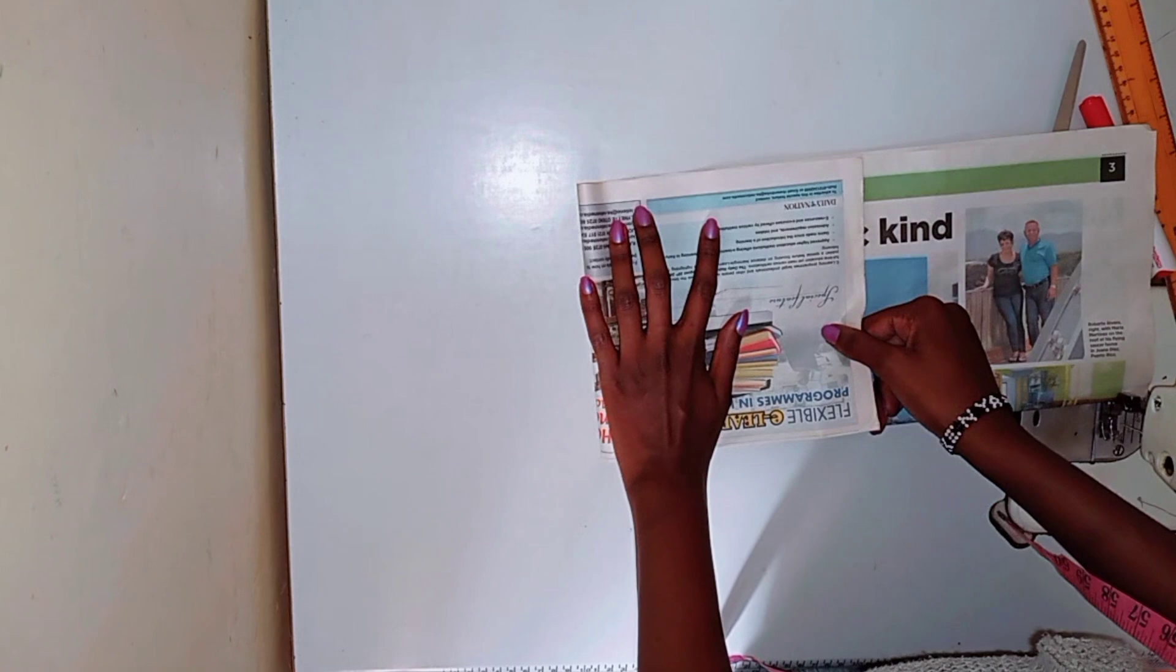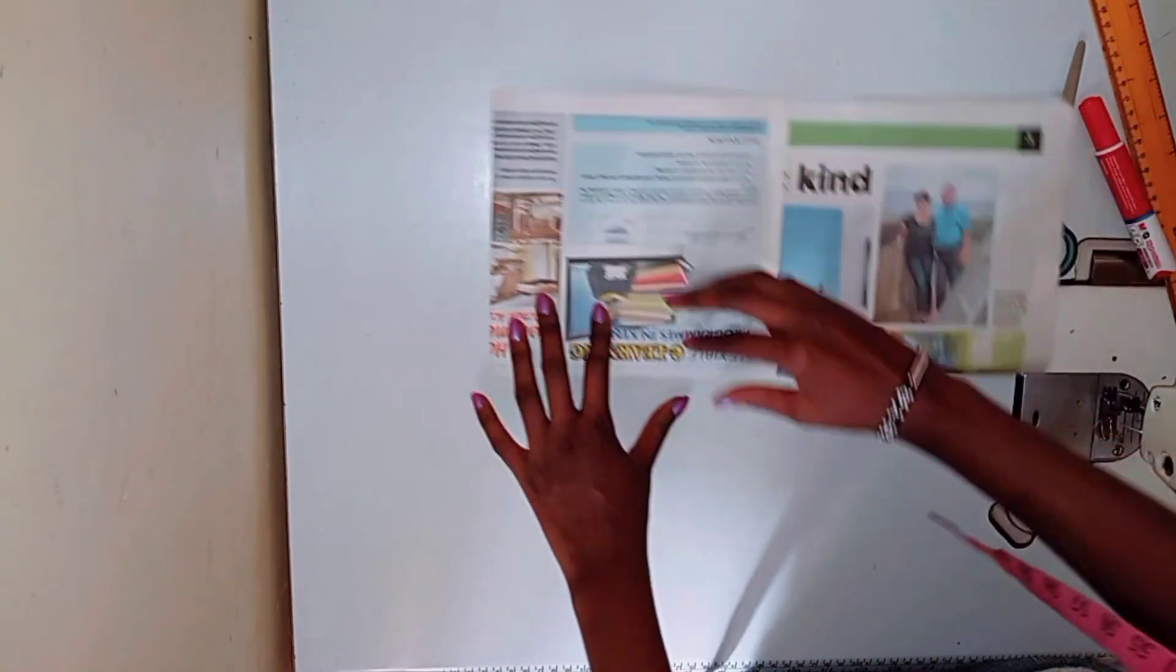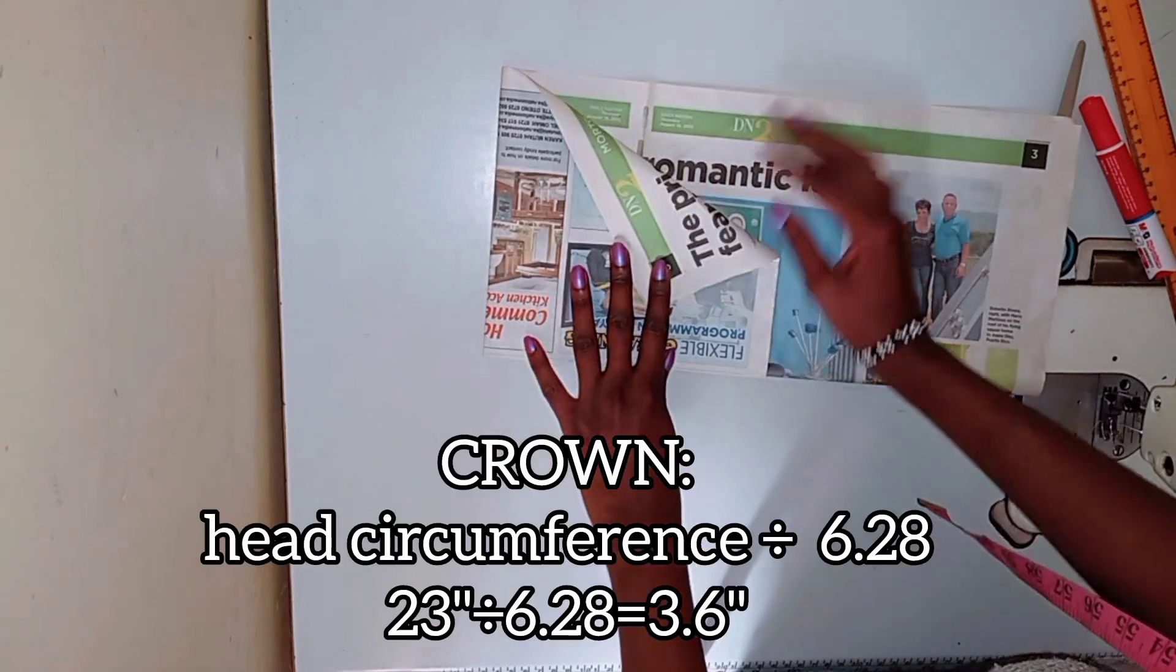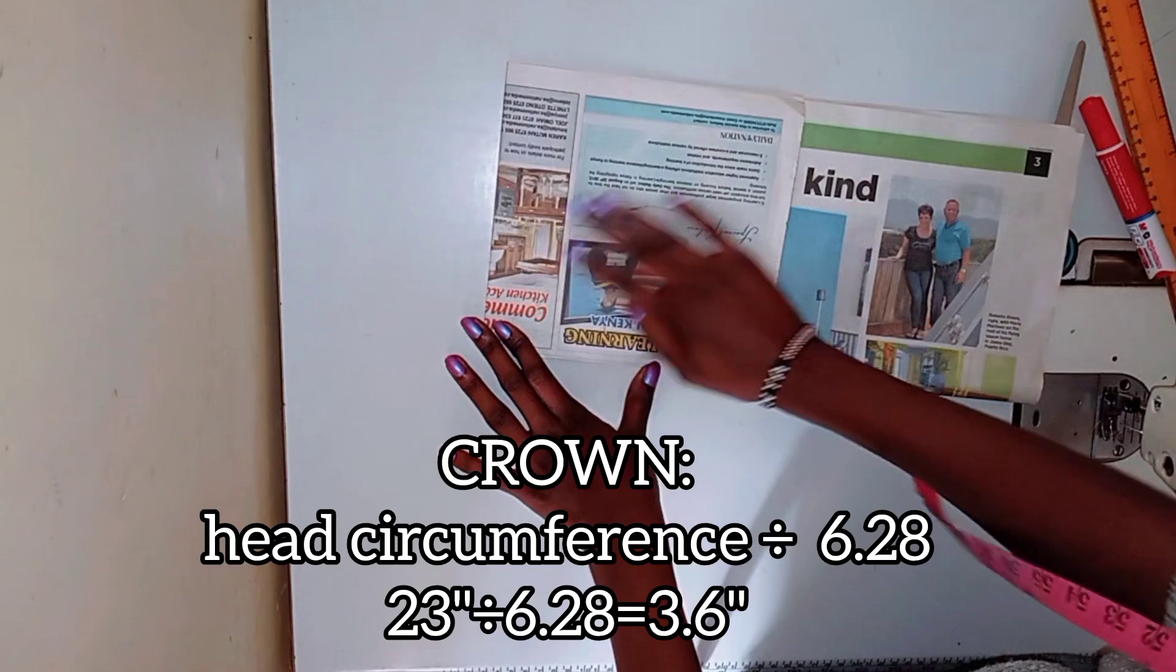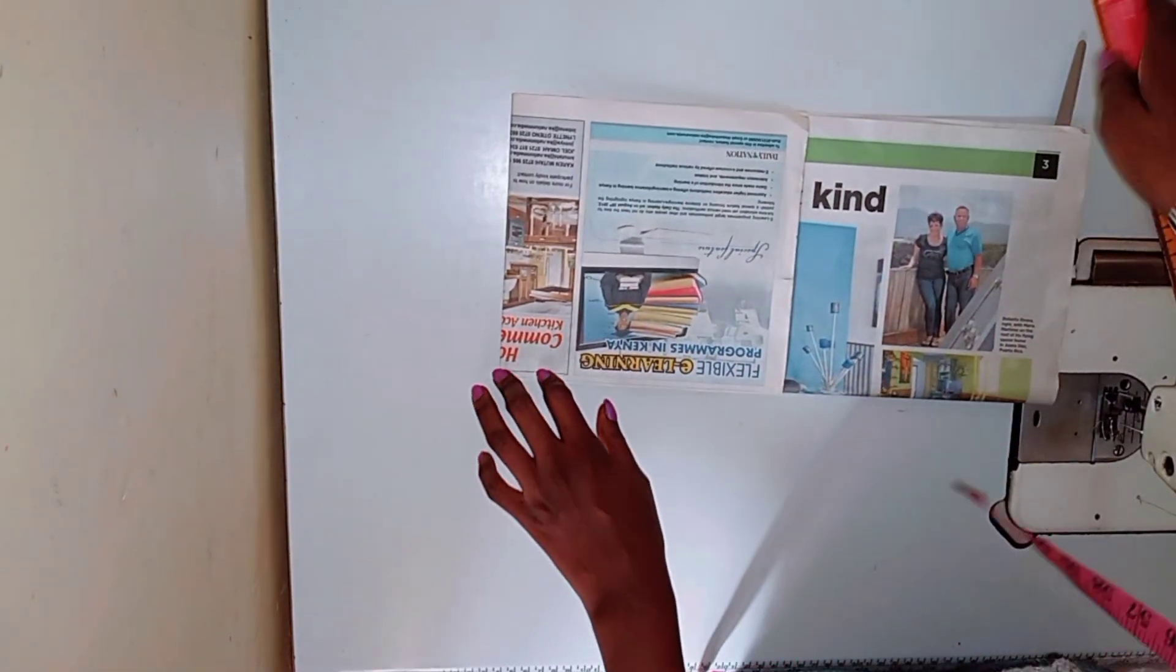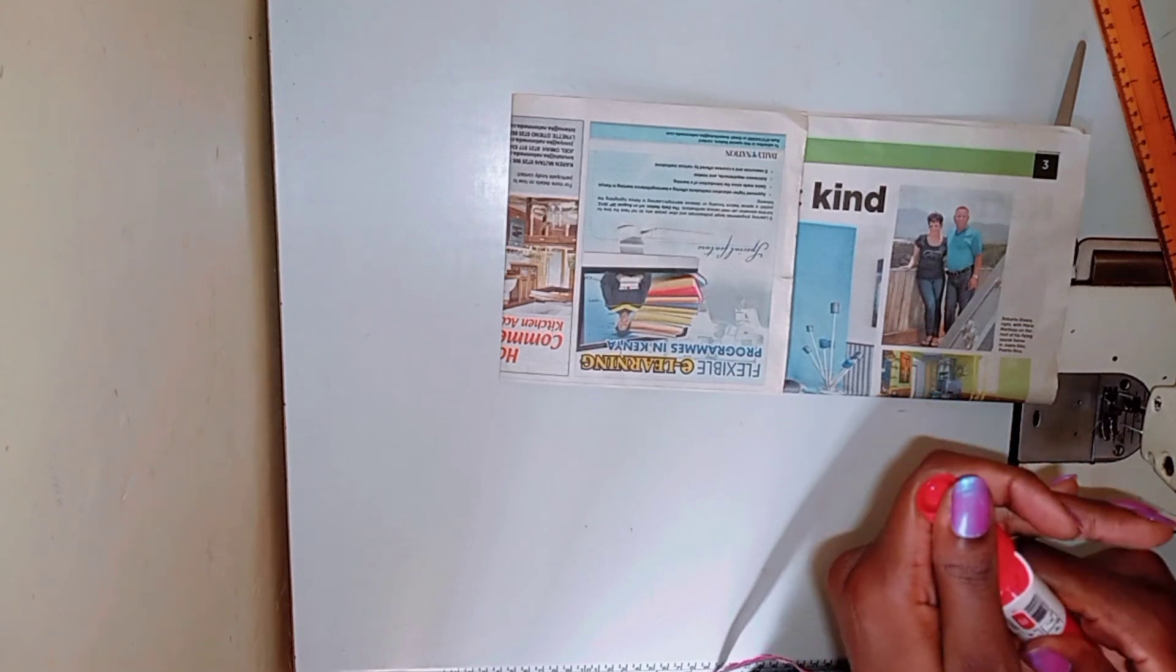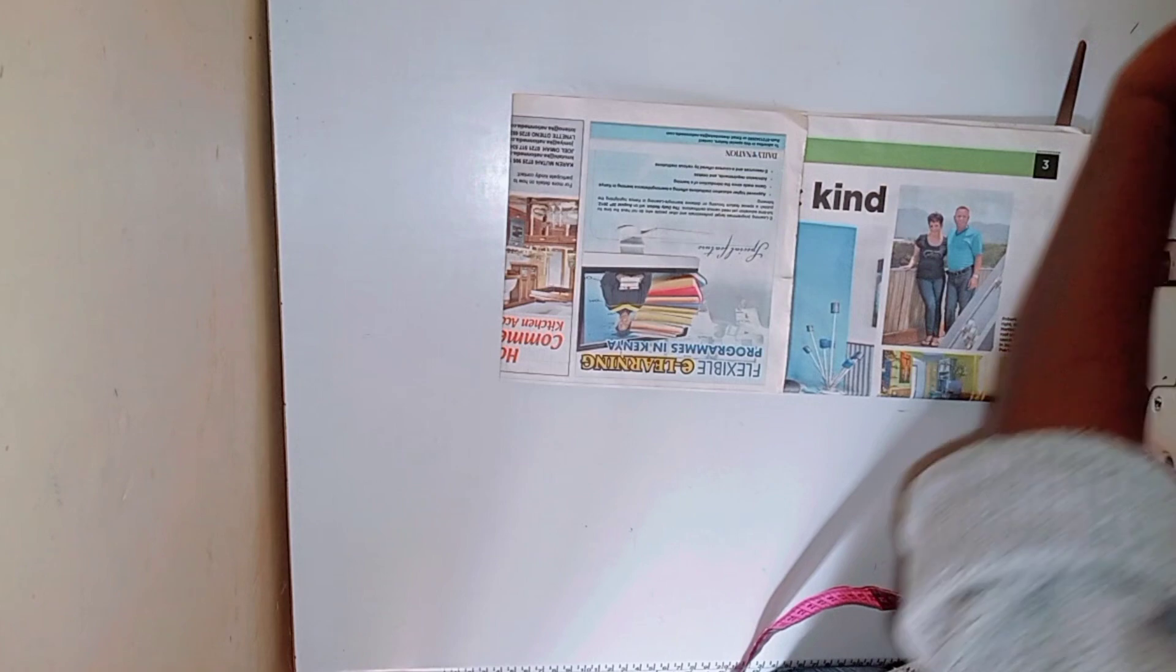Next, I'm going to fold the paper into four parts. Now let's start by making the crown of the hat. This will be the head circumference which is 23, and you will have to divide it by 6.28, which will give us 3.6 inches. So that is the radius that you're going to be working with. After you fold your newspaper into four, you're going to measure 3.6 inches from the corner of your paper.